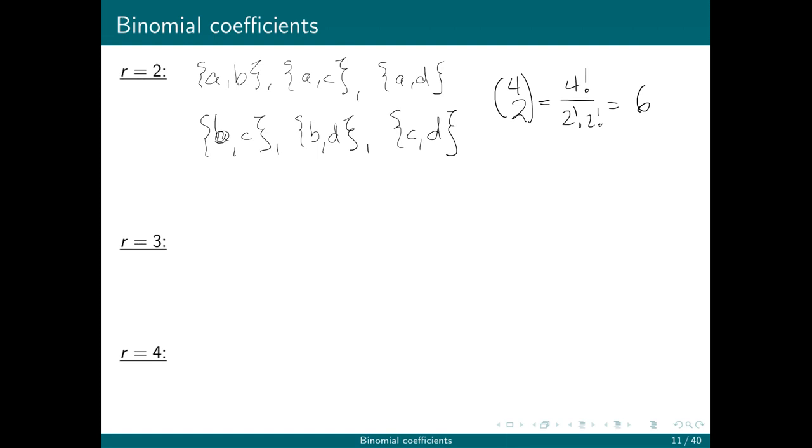All right, next up, we're going to have {a, b, c}, {a, b, d}, {a, c, d}, and {b, c, d}. 4 choose 3 is 4 factorial over 3 factorial times 1 factorial, which is equal to 4.